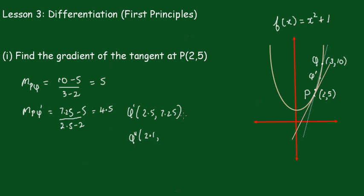With the same process, the gradient PQ'' equals 5.41 - 5 over 2.1 - 2, which gives 4.1. You can see it's going from 5, 4.5, 4.1.